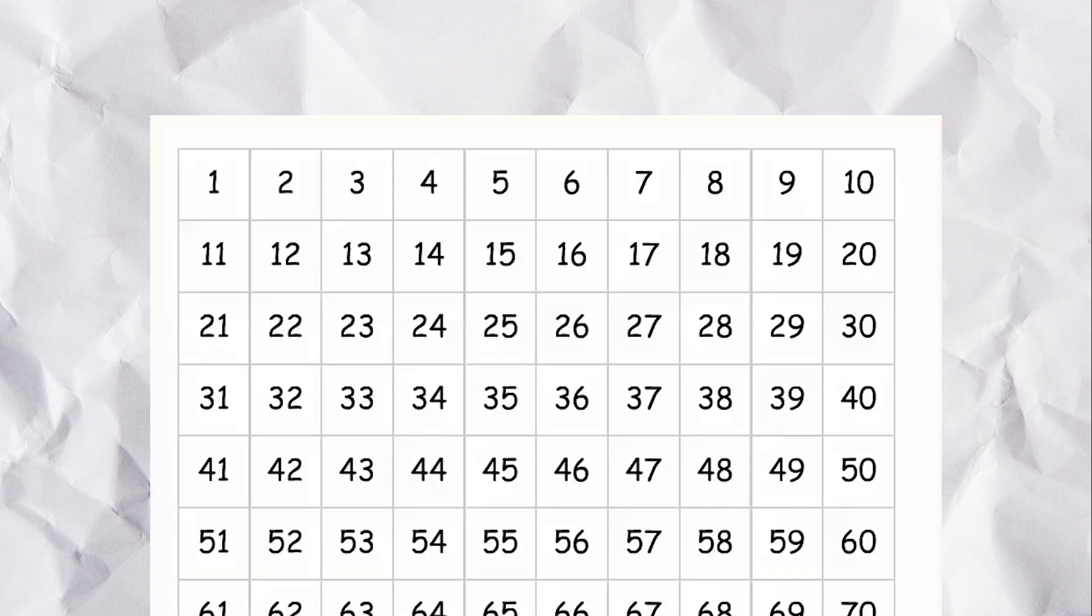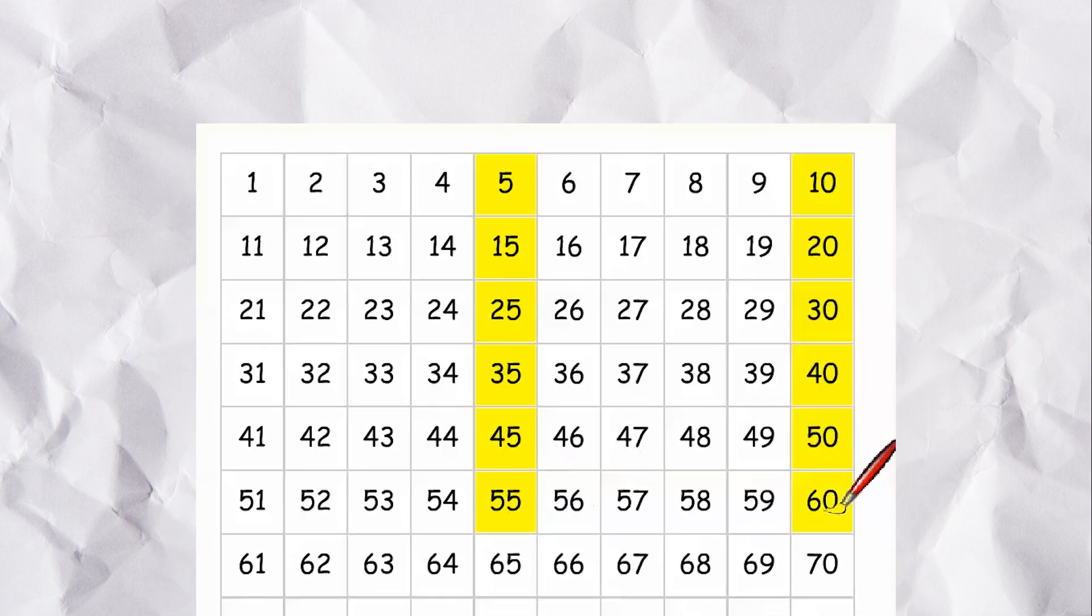Skip counting by 5s has a nice pattern. 5, 10, 15, 20, 25, 30, 35, 40, 45, 50, and so on.